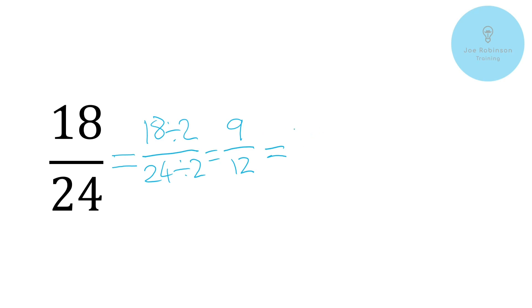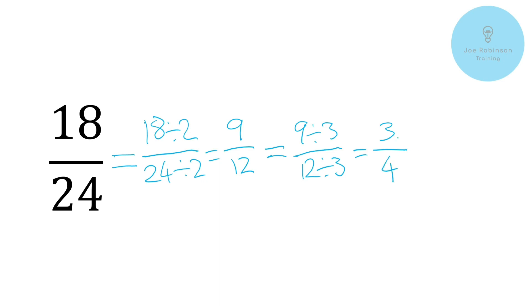Okay, so let's go through our process again — start again at two. Will nine divide by two? No, it won't. Will 12 divide by two? Yes, it will. But because nine won't divide by two without leaving a remainder, then it's completely useless to us. So we go to the next number up. Will nine divide by three? Well, yes, of course it will. Nine will divide by three and 12 will also divide by three. So nine divided by three is three, and 12 divided by three is four. So we've got our next stage of the simplification.